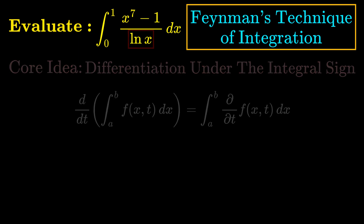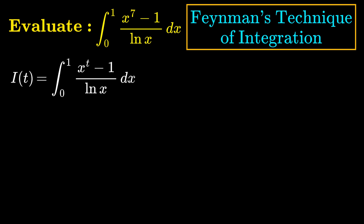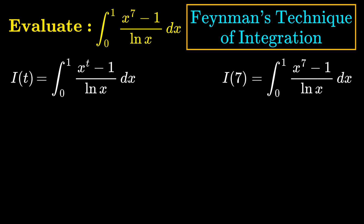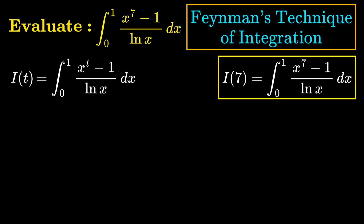What we are going to do is define a new function I(t), which is the integral of (x^t - 1) / ln(x) dx from 0 to 1. Notice that our integral that we want to evaluate is just I(7). So I(t) is essentially a generalization of this type of integral to all values of t, and our integral is just a particular case of it.